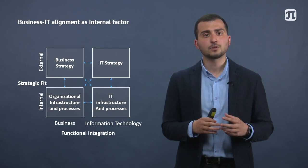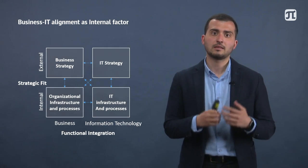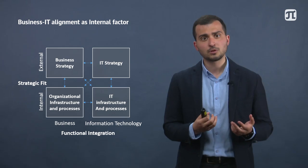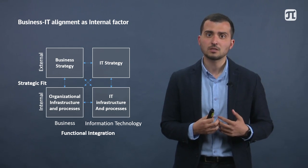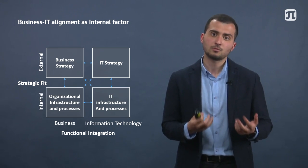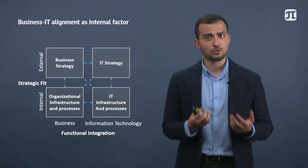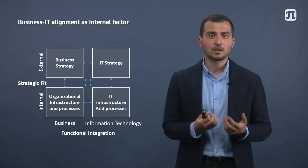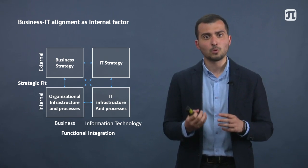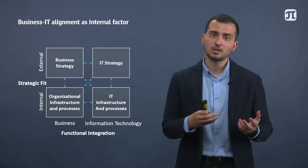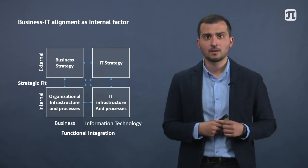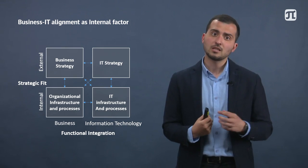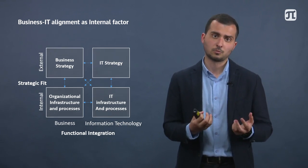The key internal factor to use enterprise architecture is the need for business and IT alignment. Those experienced in software projects would probably admit that sometimes software is implemented just to be implemented. This is crucial for successful digitalization. IT has to solve business tasks, IT strategy has to fit business strategy, and top management has to support this at both strategic and execution levels. Organizational structure and business processes have to be integrated with IT infrastructure to create a true digital enterprise.